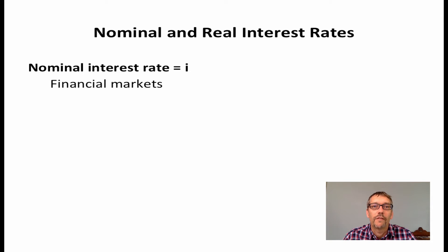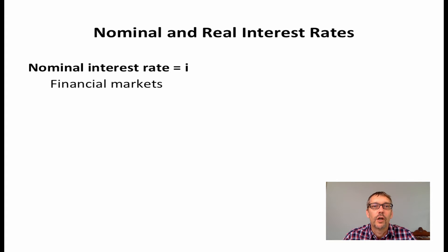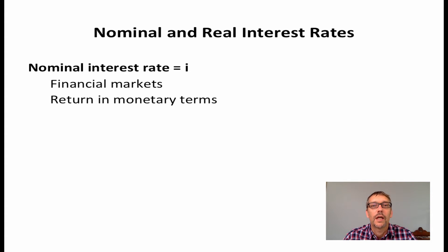For example, if I go to the bank and take out a loan, the interest rate on that loan will be quoted in nominal terms. Or, if I look at my credit card statement, the interest rate I pay on my credit card will be a nominal interest rate. The key feature of a nominal interest rate is that it indicates the return to a loan purely in monetary terms — that is, it indicates the number of units of currency that are paid on a loan.